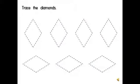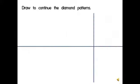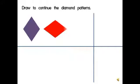After that, look at page 3. Can you trace the diamonds? Please do it slowly and neatly. Then you can draw to continue the diamond patterns. You can copy the color from this video. Miss Rosto has purple diamond, red diamond, purple diamond. What color comes next? Can you draw and color it neatly?